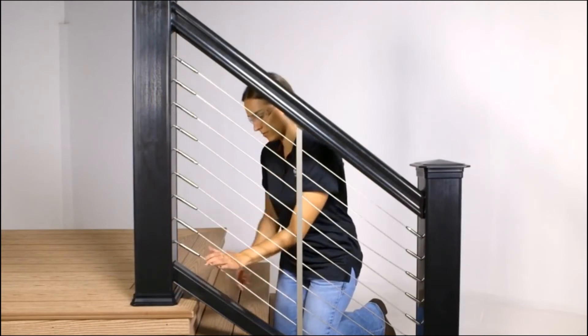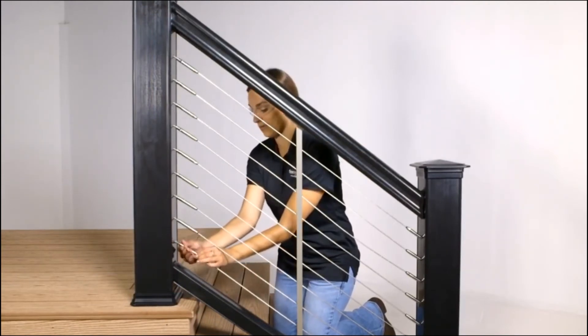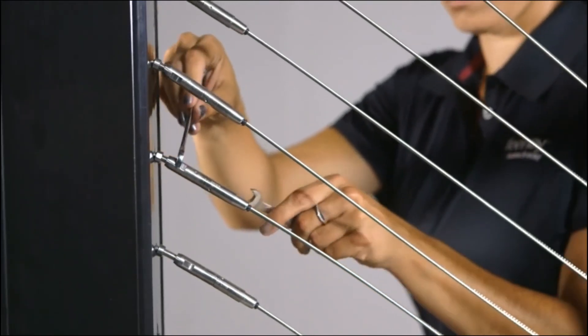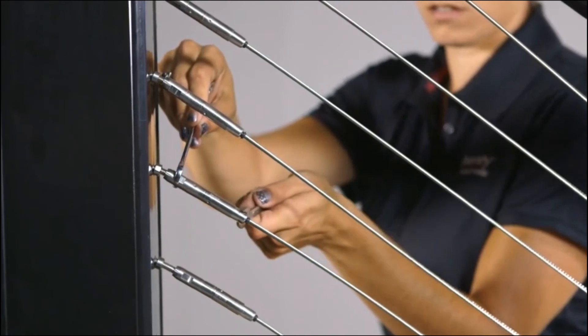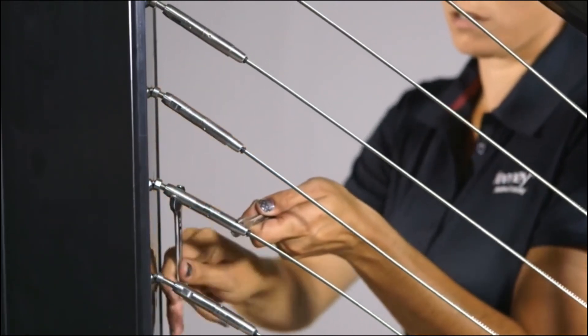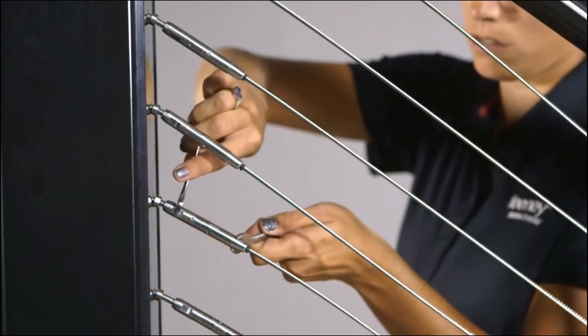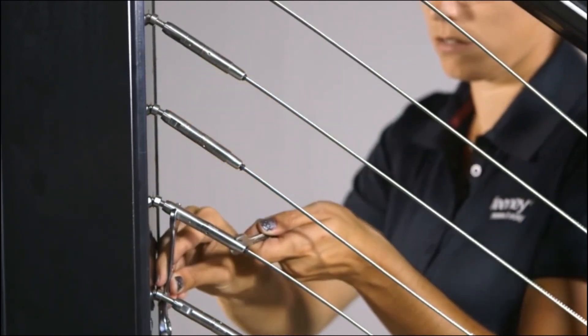Once all the cables are installed, we are ready to begin final tensioning. Be sure to follow the recommended cable tensioning sequence to help minimize stress on the railing frame and easily adjust uniform tension across all of the cables. Start at the center cable and alternate until all cables are tightened. Use a pair of three-eighths inch open end wrenches to adjust tension at the Quick Connect lag swivel turnbuckles. Use one wrench to hold the body of the turnbuckle steady while using the other wrench to tighten the swivel end. This will ensure the cable does not twist.